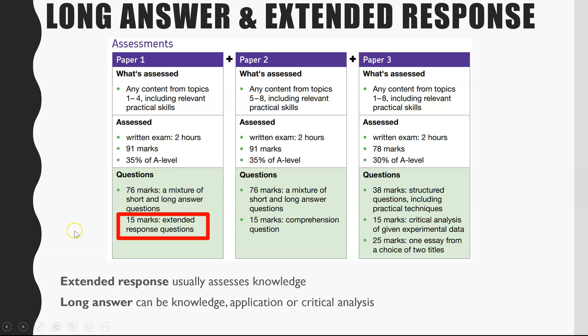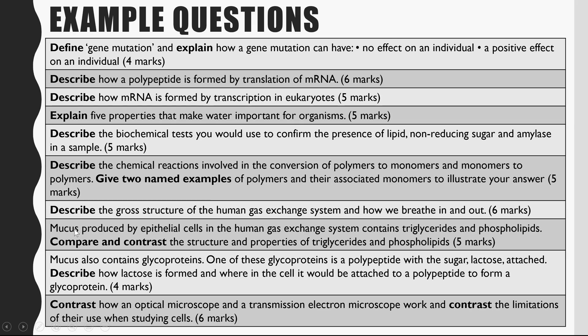It's 15 marks on paper 1, and I've got here lots of examples of extended response questions which have been on past papers for AQA. That 15 marks will either be a combination of three 5-mark questions, or a 4-mark, 6-mark, and a 5-mark question. As I said, they're mainly knowledge based — just testing what you know. From the command words we've got define, describe, explain, compare, contrast — they are the lower level skills in the exam technique.